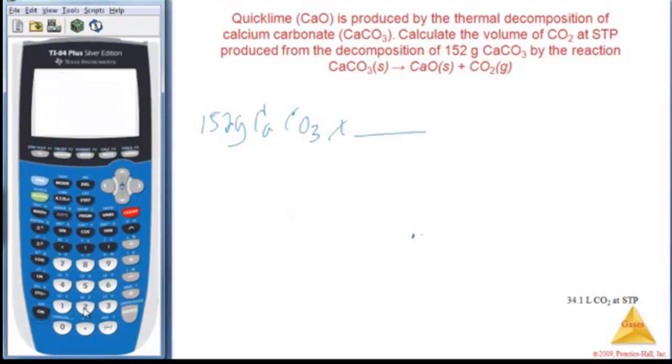So let's do that. So three oxygens is going to be 48, 48 plus 12.01 for carbon, plus calcium is 40.08. That's a molar mass of 100.09.